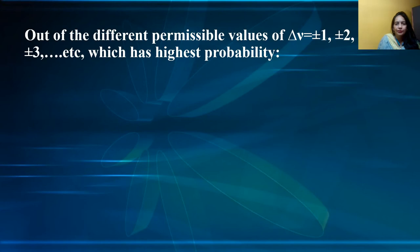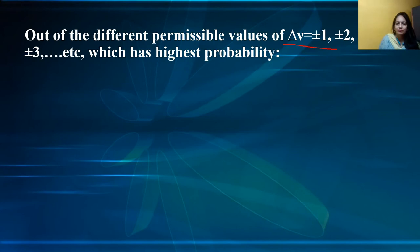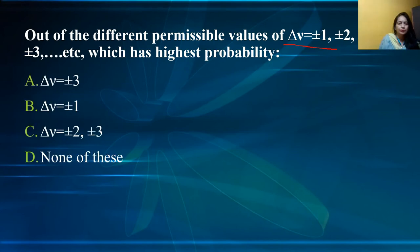Out of the different permissible values of Δν = ±1, ±2, ±3, etc., the highest probability transition is for Δν = ±1. So option B — Δν = ±1 — is the correct option.